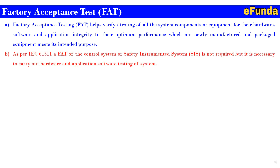As per IEC 61511, a FAT of a control system or a safety instrumented system is not required, but it is necessary to carry out hardware and application software testing of the system. The FAT is a practical way to test and verify the proper operation of the safety instrumented system — the control system — which may also be applicable for DCS, PLC, etc. systems.